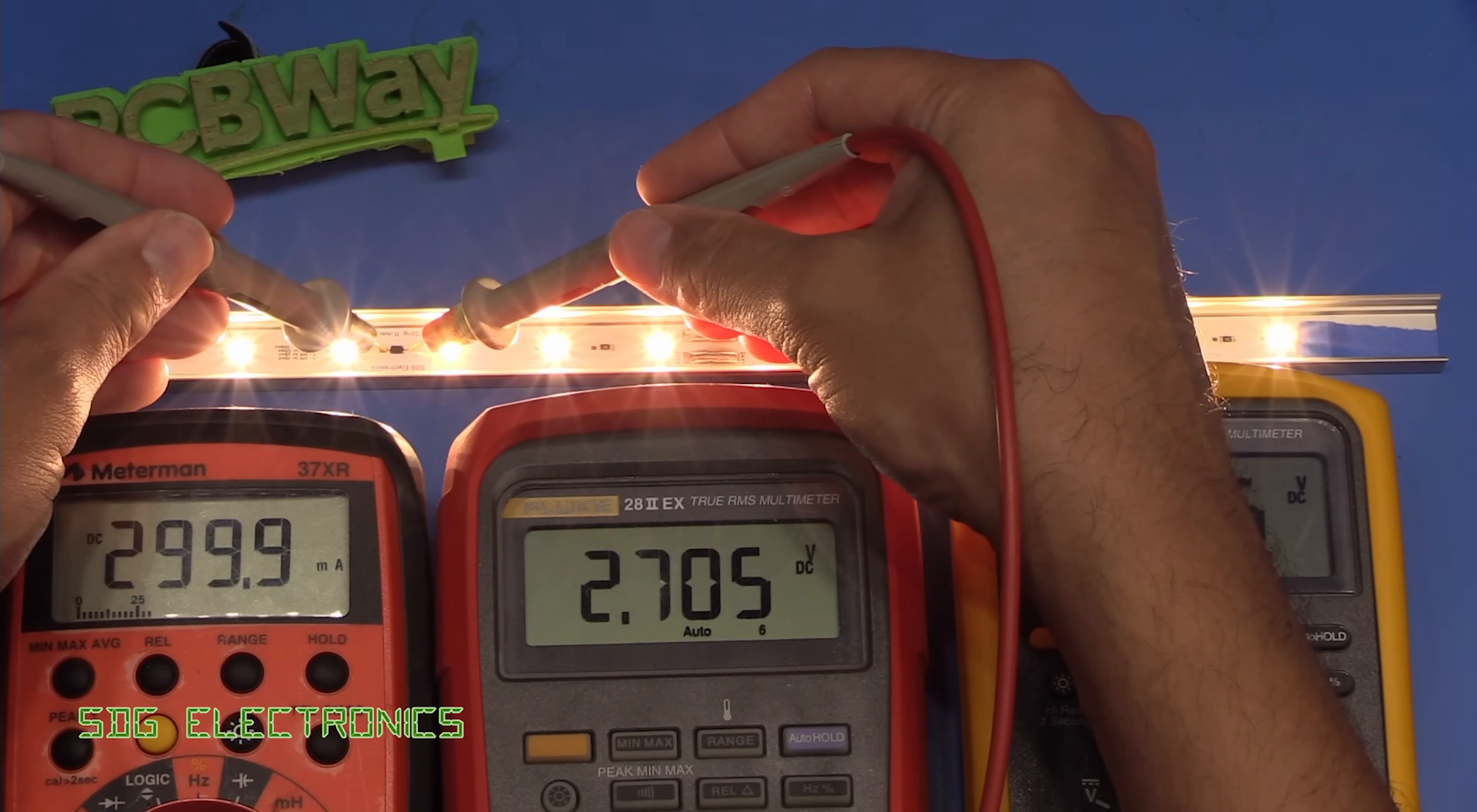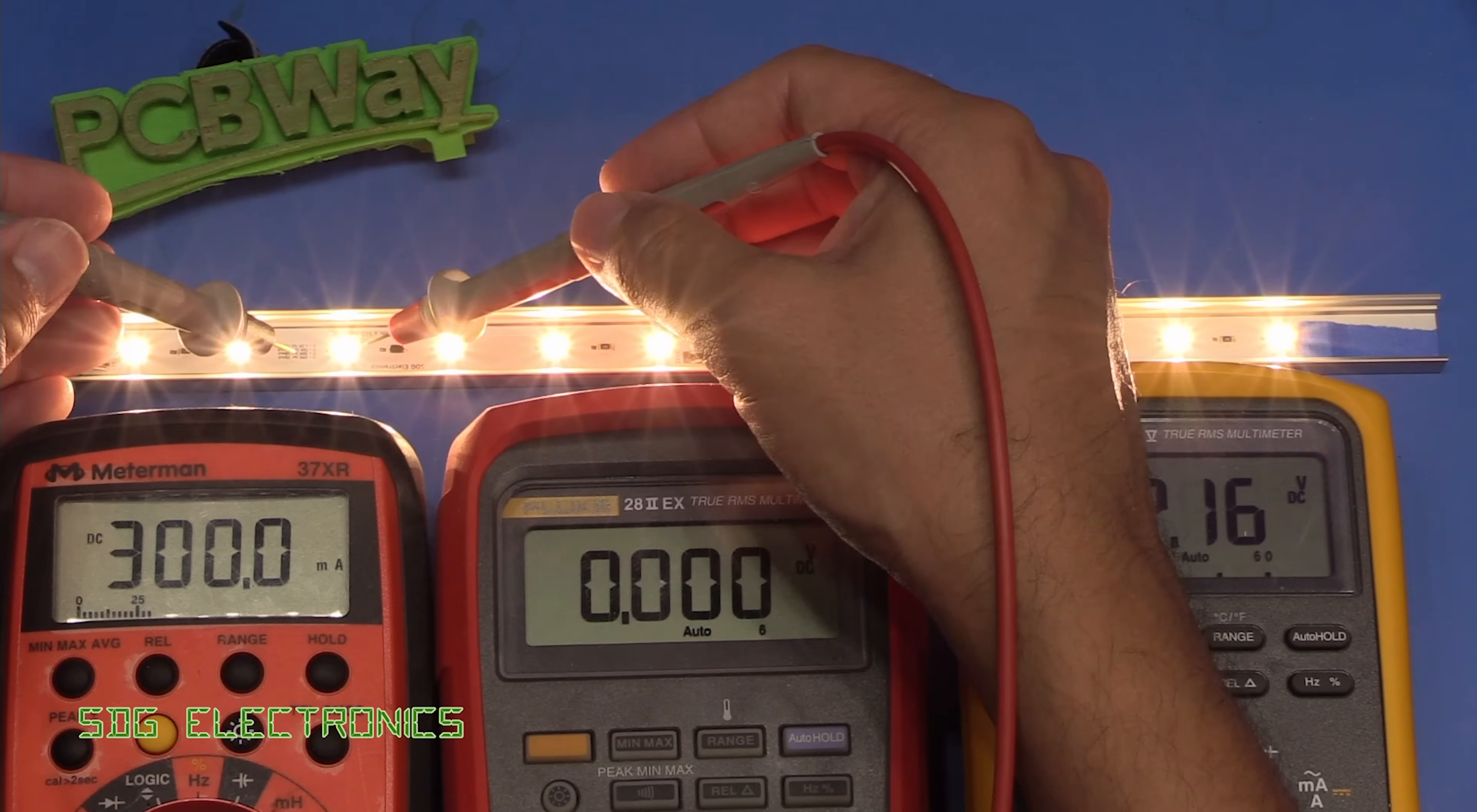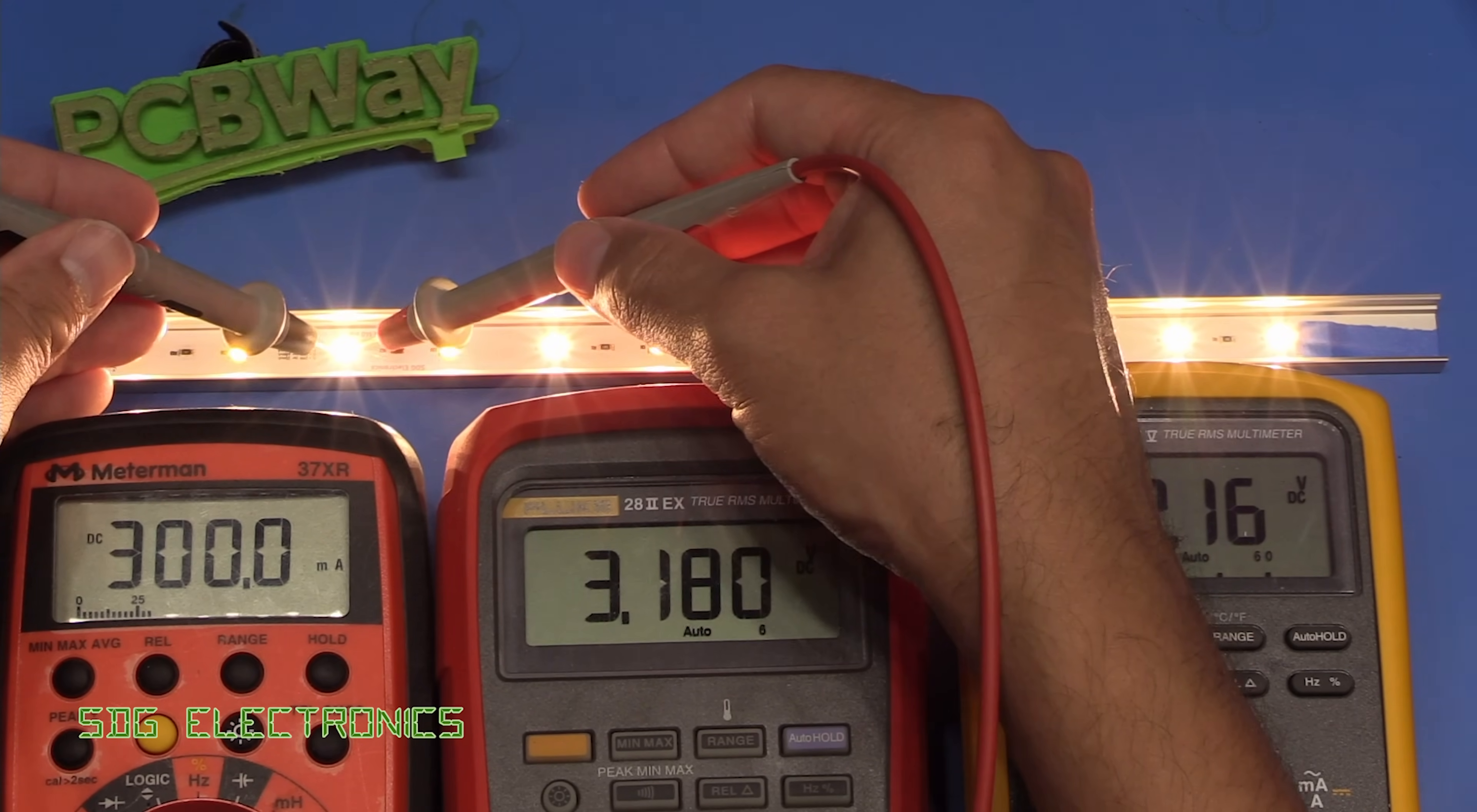So let's have a look at the voltage drop across the diode. So on the multimeter in the middle there you can see we're just above the minimum for it to be regulating properly about 2.7 volts and across the LEDs is around 3.2 volts.